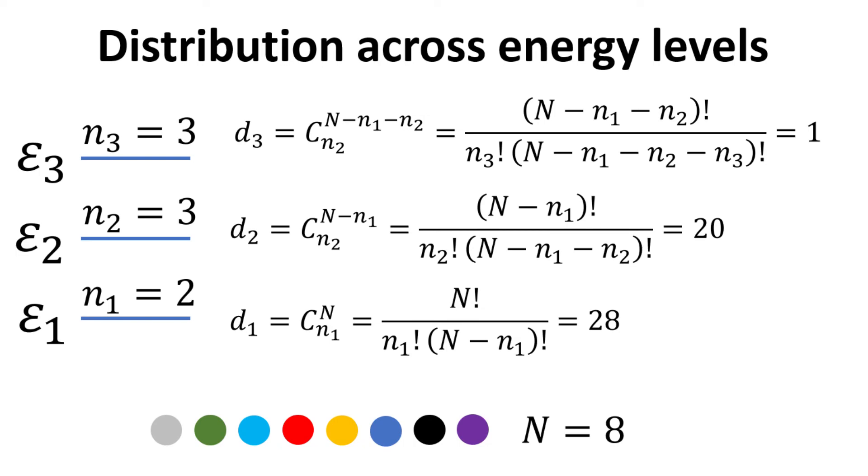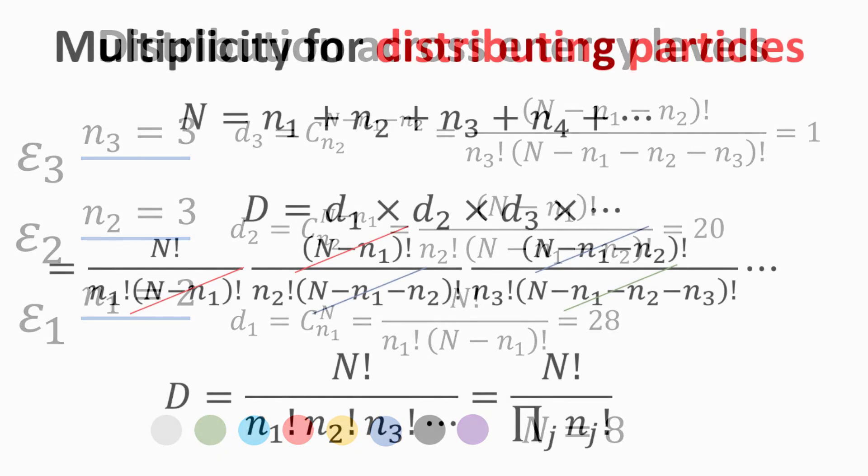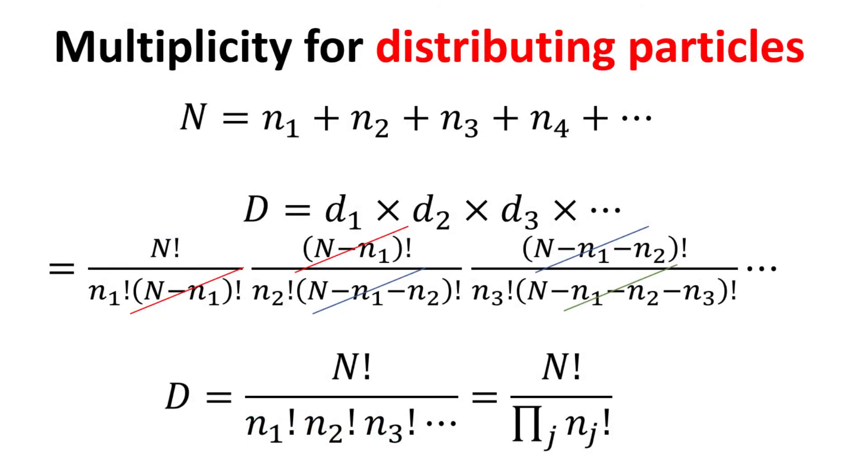Similar calculations can be done for the third energy level. Given the total number of particles to be n, let us denote d to be the multiplicity, or the number of ways of allocating n1 particles to energy level 1, and n2 particles to energy level 2, and so on.